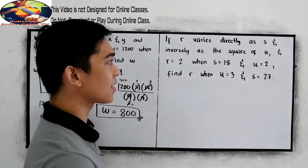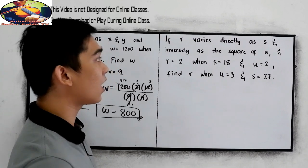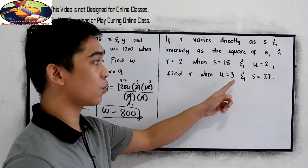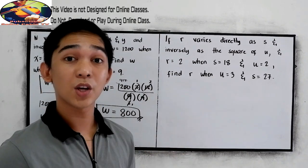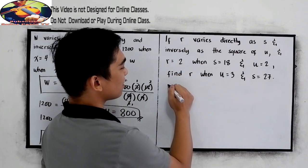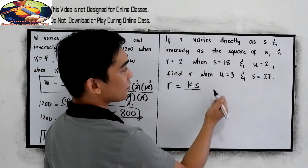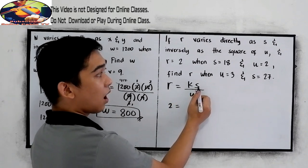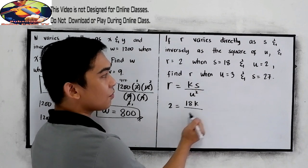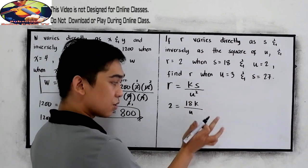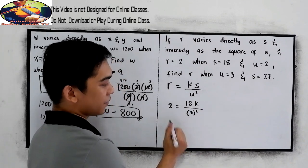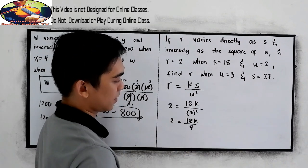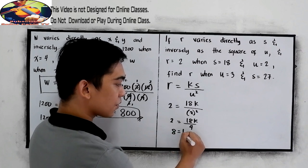Number 2. If r varies directly as s and inversely as the square of u, and r is equal to 2 when s is equal to 18 and u is equal to 2. Find r when u is equal to 3 and s is equal to 27. Find the equation of variation: r varies directly as s and inversely as u squared. r is 2, is equal to 18k over u squared. So our u is 2, then squared. Now we have 2 is equal to 18k over 4. Cross-multiply, so 8 is equal to 18k.